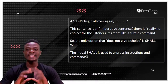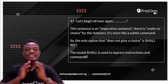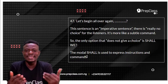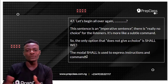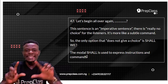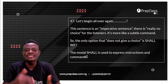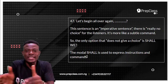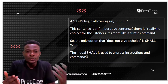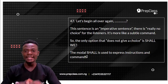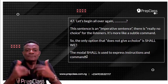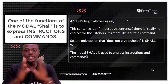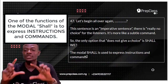Looking at this sentence, 'let's begin all over again' is an imperative sentence. There is really no choice for the listeners. It's not like saying 'can we begin all over again?' where the audience actually has a choice. It's more like a subtle command — let us begin all over again. Although it comes in the form of a question, there is basically no choice.